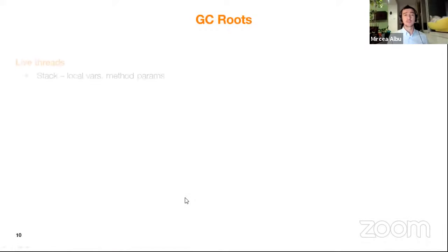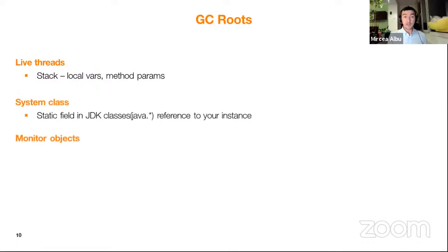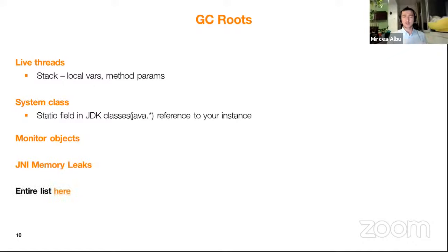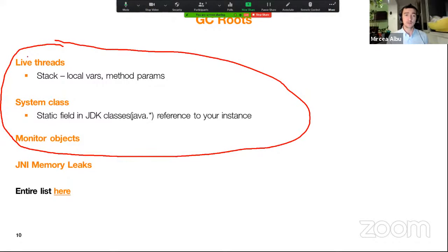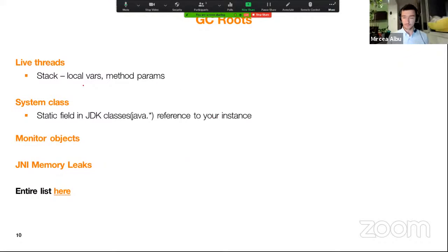GC roots can be of many types. They are usually live threads, local variables, or method parameters on the stack. Another type includes system classes — static fields in the JDK root of Java that hold references to your instance. There are also monitor objects and JNI memory leaks. There are many types, but our focus today is mostly on the first two, which are where most memory leaks come from.